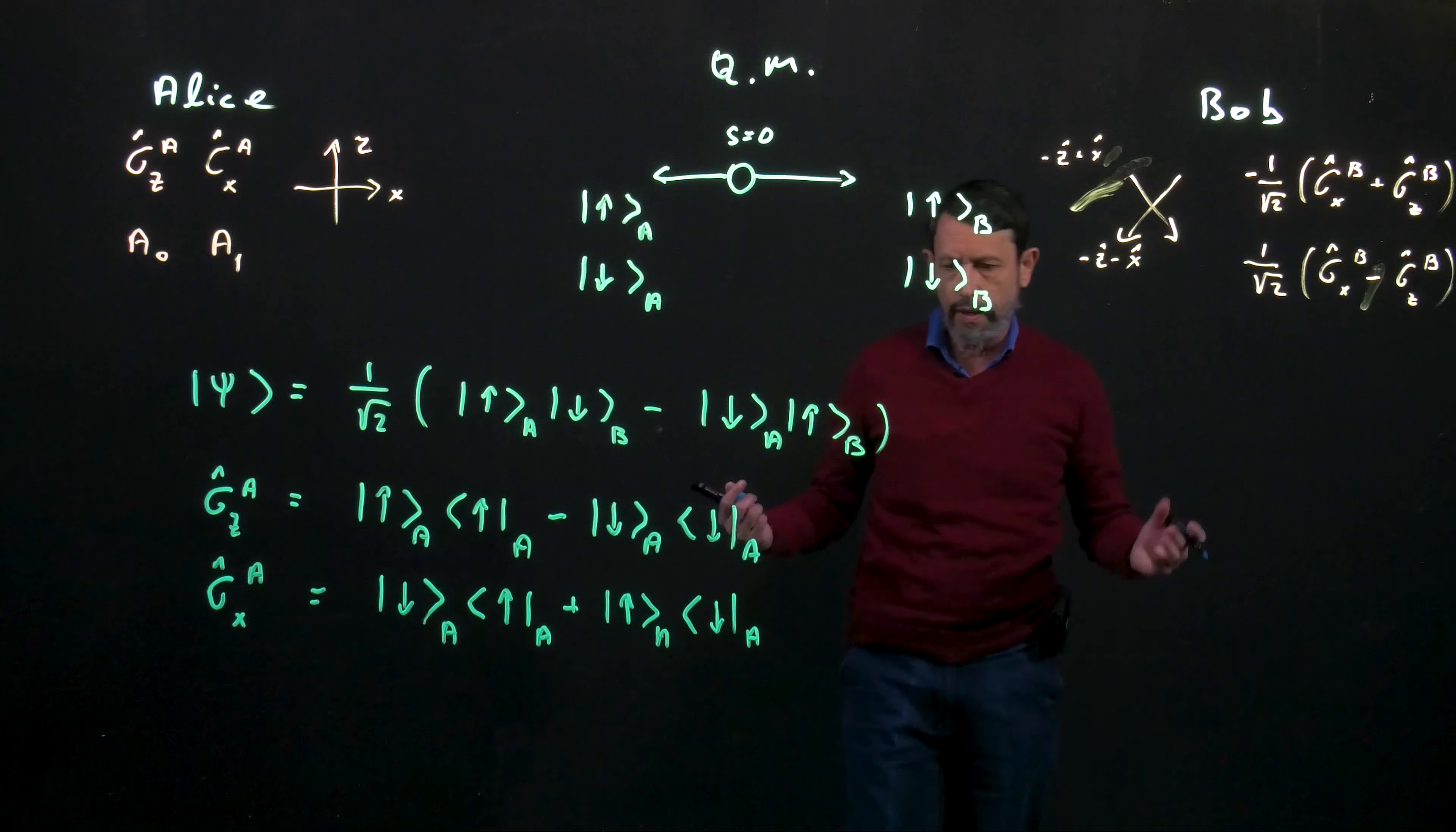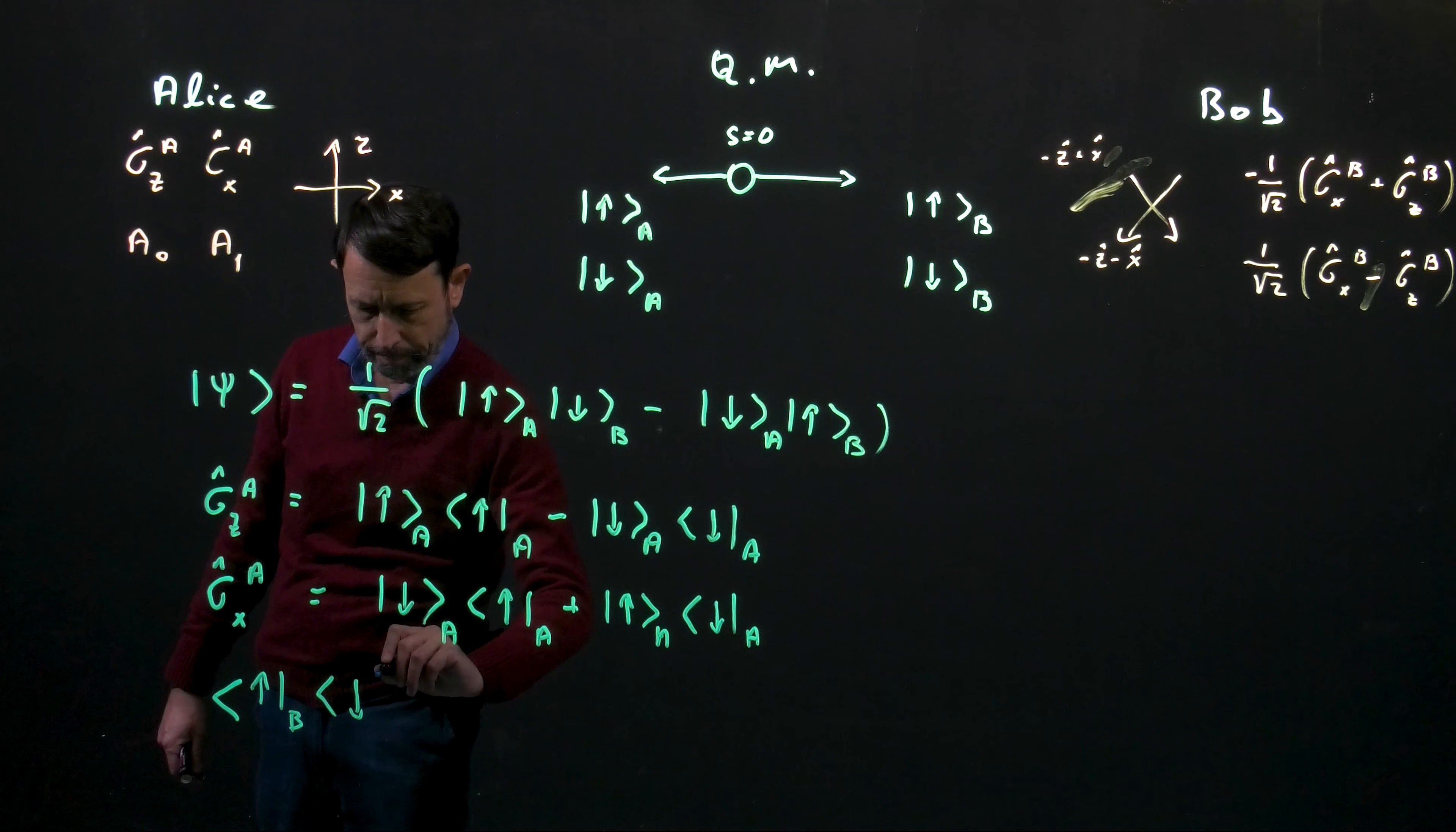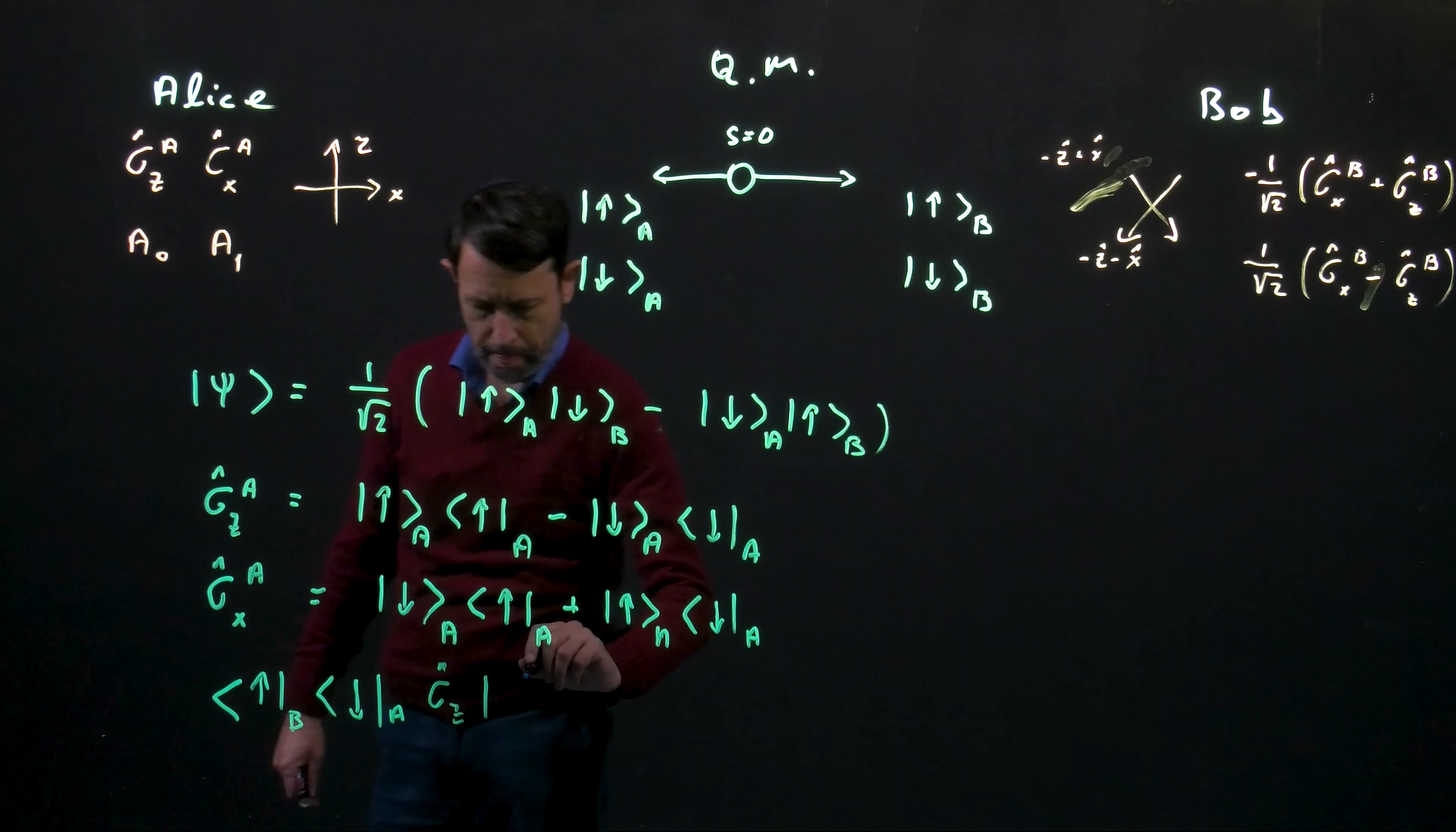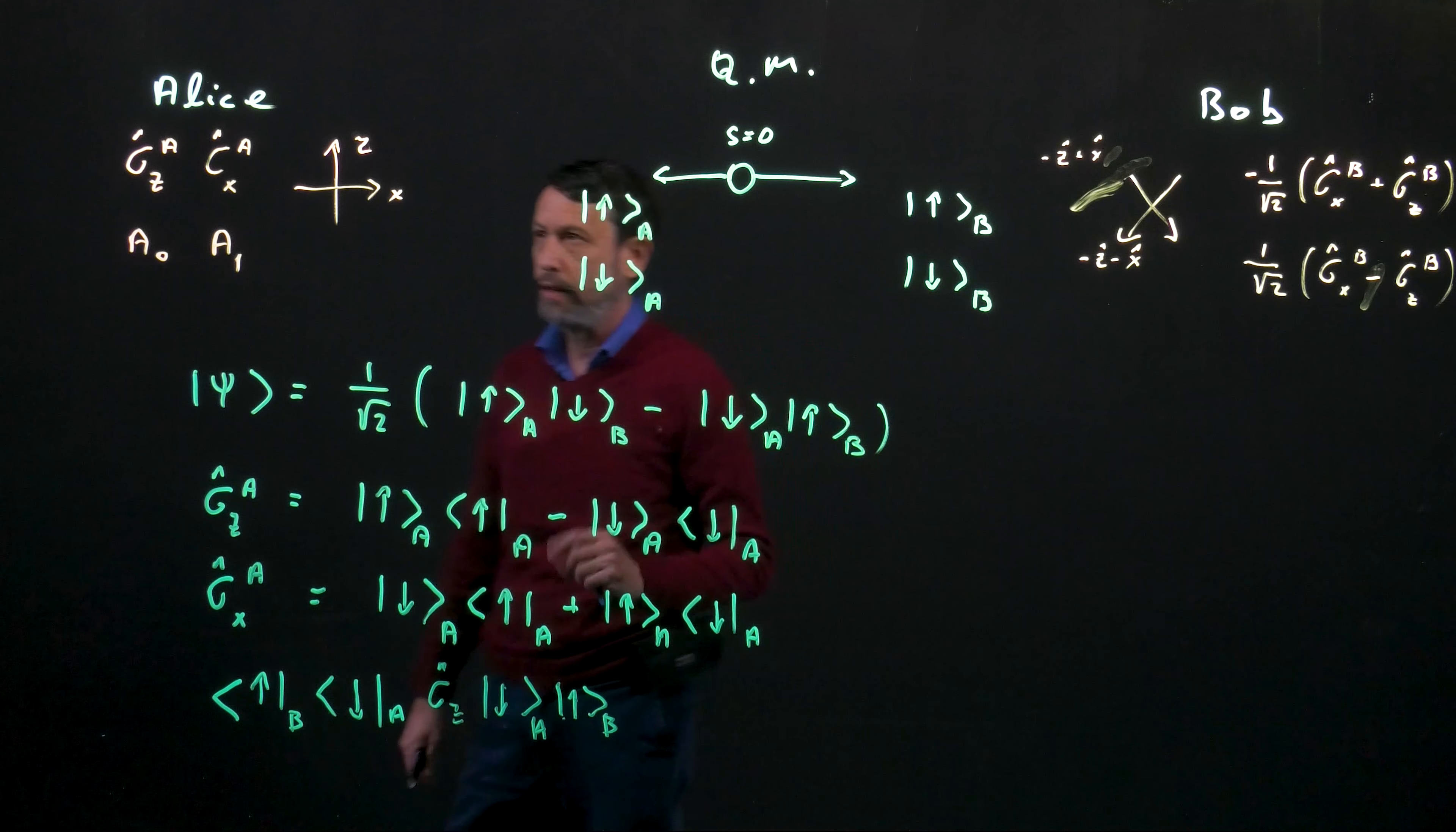So if I'm writing down this part of the wave function and I'm writing down the operator sigma z, what do I expect to get? Of course, in this case, the particle a has a spin of minus one and I expect to get as an expectation value minus one.